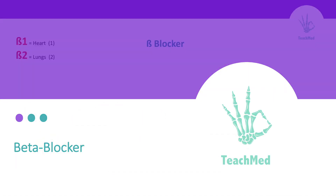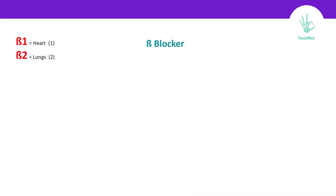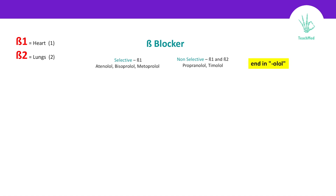Beta blockers. Beta blockers are divided into selective and non-selective. Selective means it works on a specific receptor, and here we're interested in beta-1, since it's found in the heart. Examples: atenolol, bisoprolol, and metoprolol. Non-selective means it works on any beta receptor, either 1 or 2, like propranolol and timolol. Just to make it simple, the name always ends with -olol.